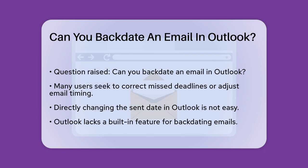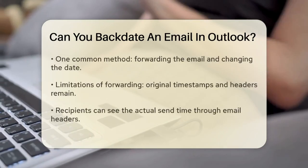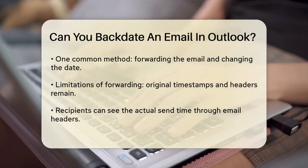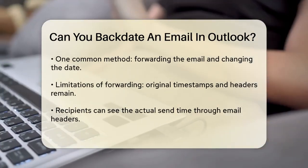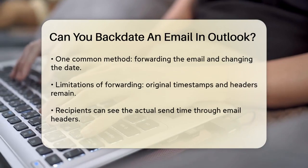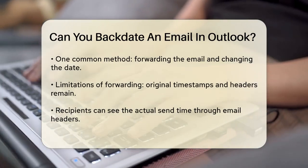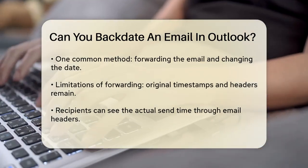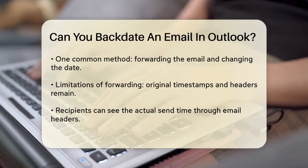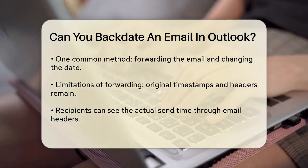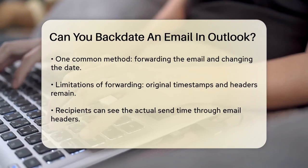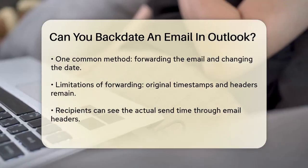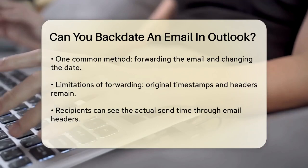One method that people often suggest is forwarding the email and then changing the date on the new forwarded email. However, this approach has its limitations. When you forward an email and modify the date, the original timestamps and headers of the email remain intact. This means that anyone who checks the email's headers can still see the original send time and other intermediate timestamps, making it clear that the email was not sent at the claimed time.